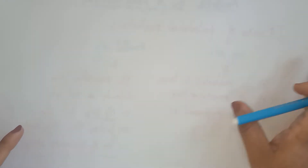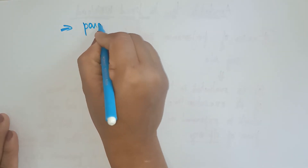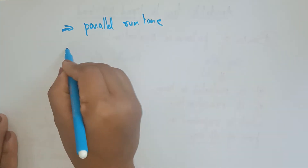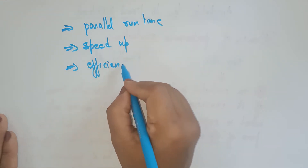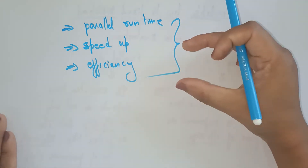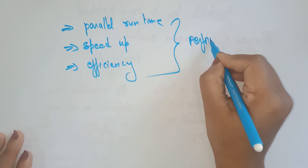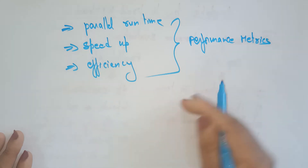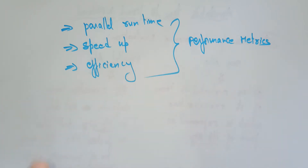The important performance matrices are: parallel run time, speed up, and efficiency. Try to remember these three terms when you're talking about performance evaluation — these are the performance matrices. We need to know about parallel run time, speed up, and efficiency — their definitions and formulas. If you understand these, then we will implement these concepts in our Amdahl's Law, as there is a complete relation between all these concepts.